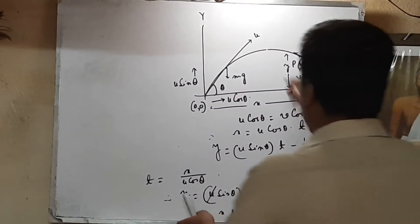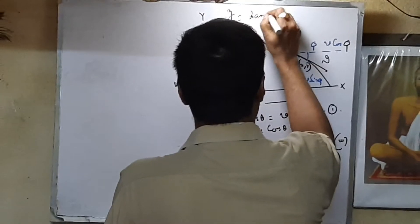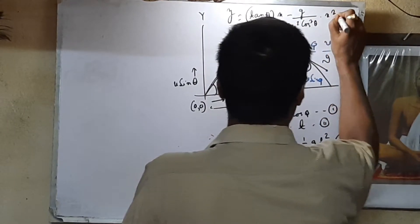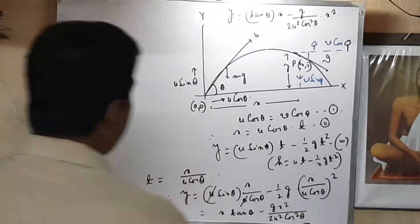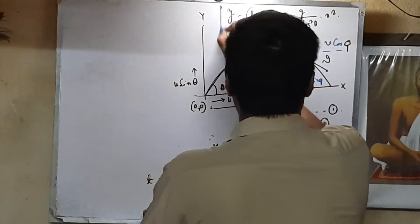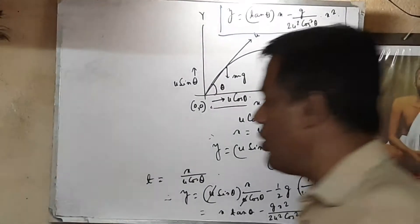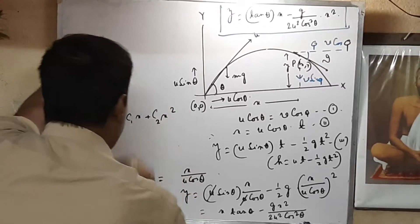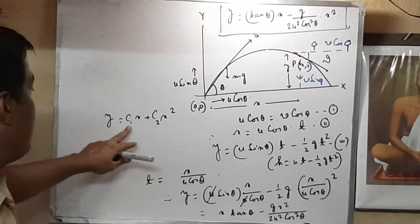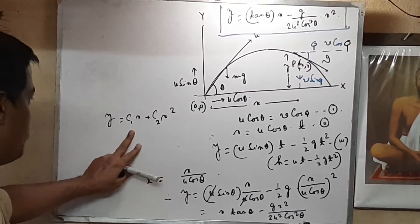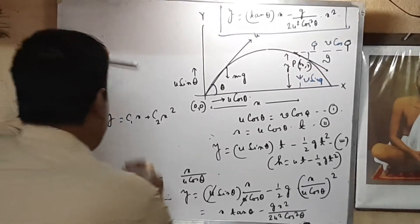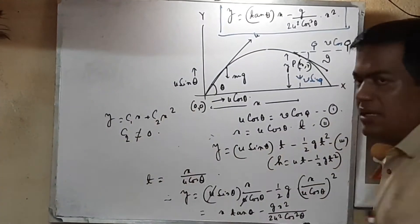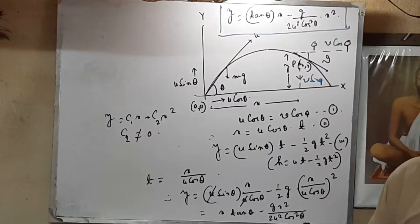This trajectory equation is of the form y = C₁x + C₂x², where C₁ and C₂ are constants, with C₂ must not equal zero. C₁ may be zero, but C₂ must not be zero. This is the familiar equation of a parabola. So the trajectory of the projectile is definitely a parabola.